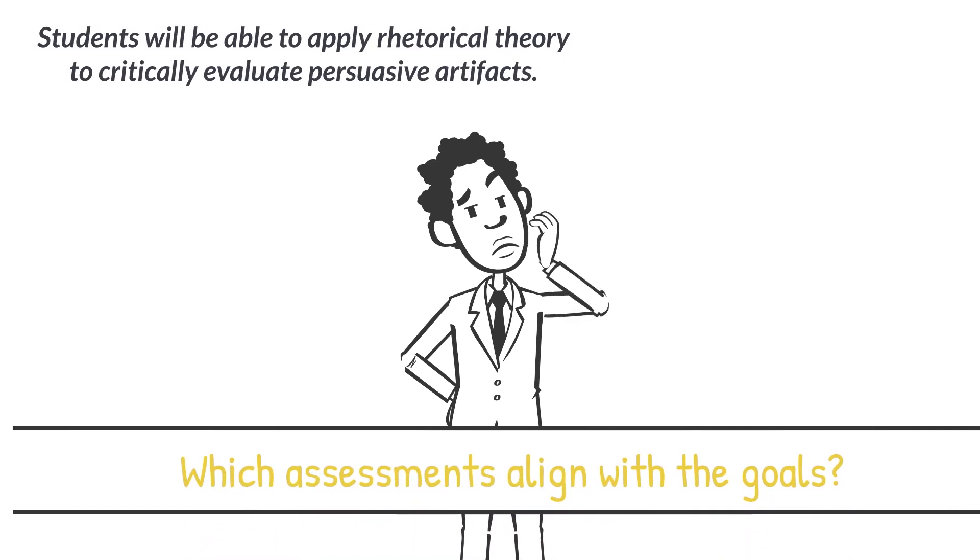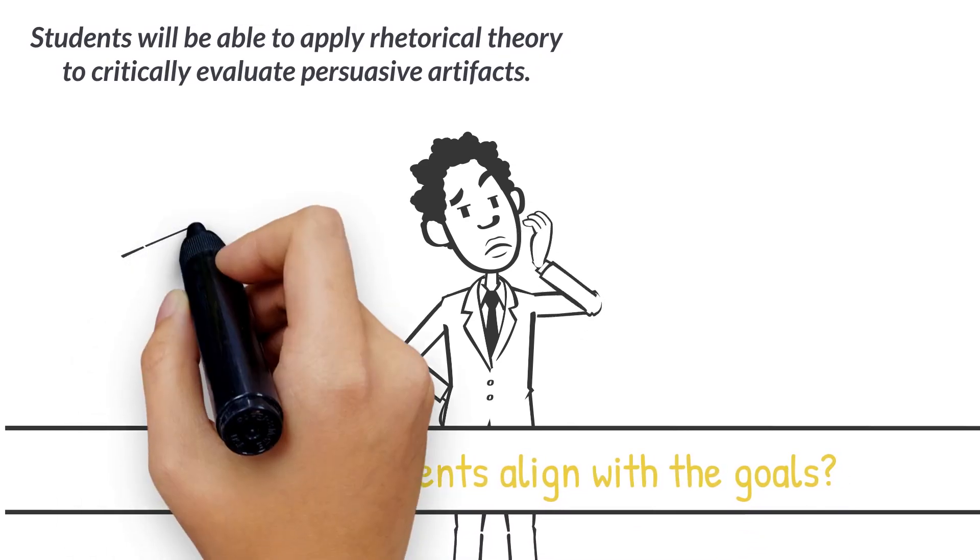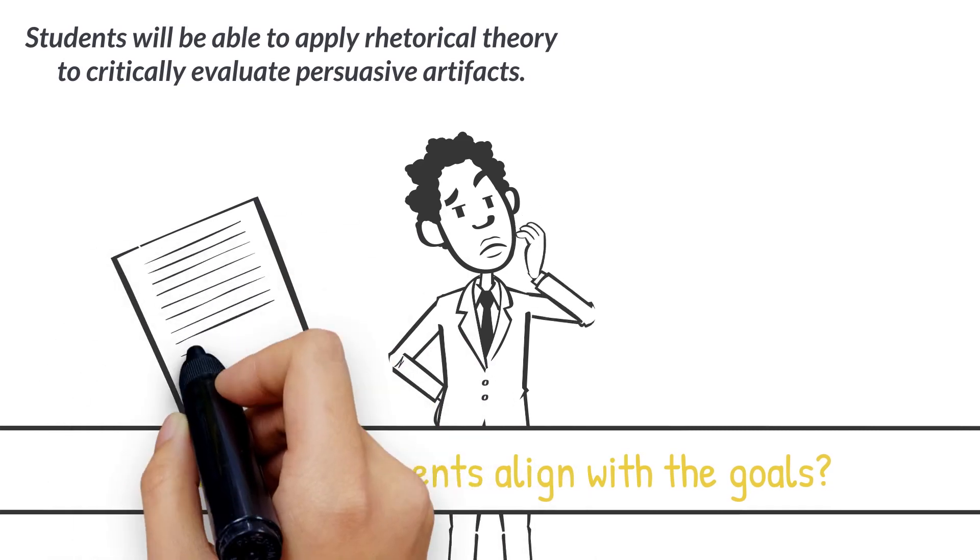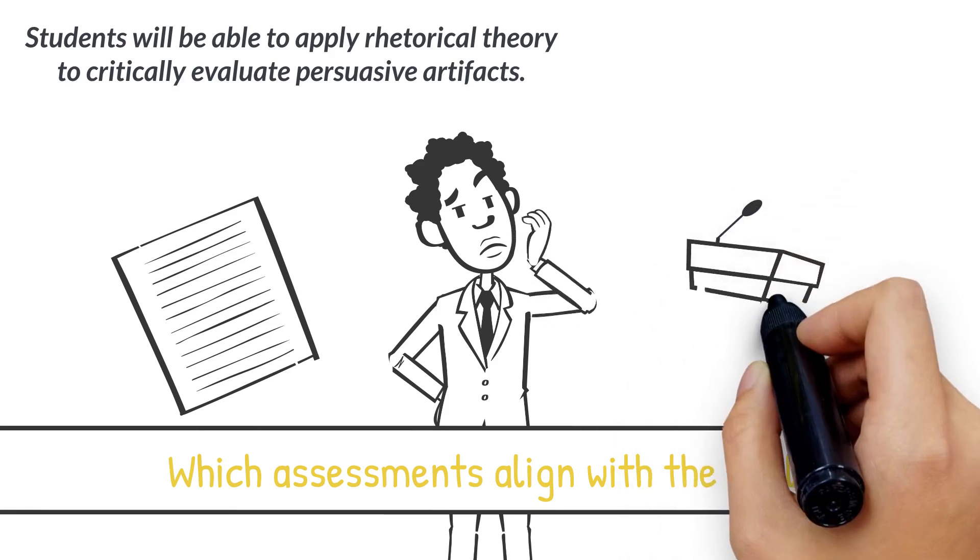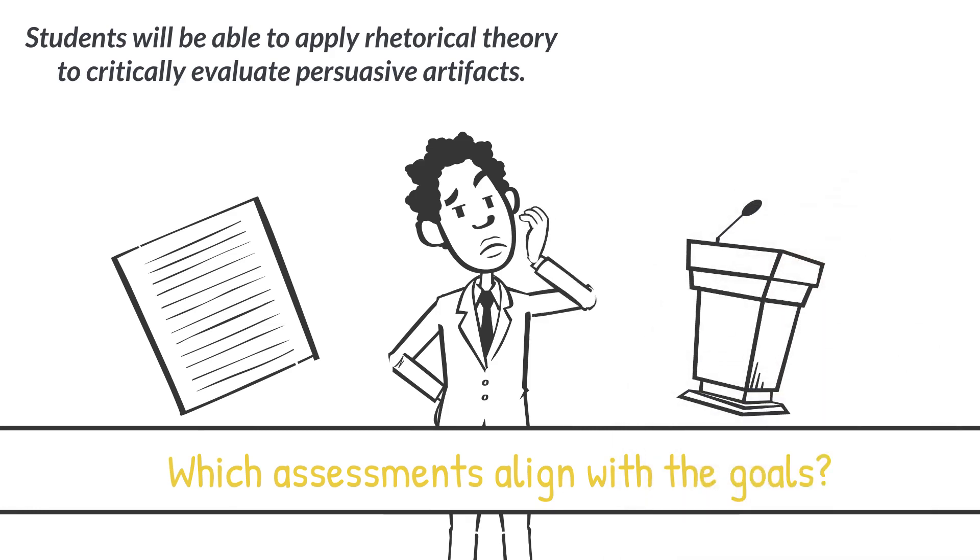Consider how students might demonstrate that they've learned to do so. They could choose a persuasive artifact and write an analytical paper. They could analyze artifacts by way of short written homework assignments. They could demonstrate this through an essay or a short answer question on an exam. Or they could give oral presentations in which they discuss their analyses of artifacts.